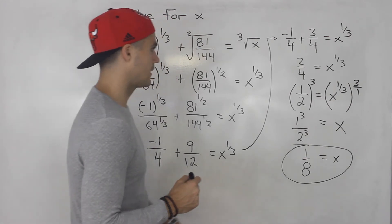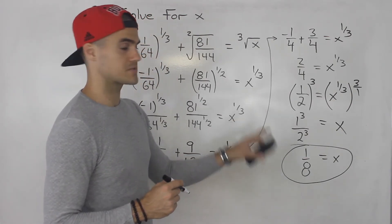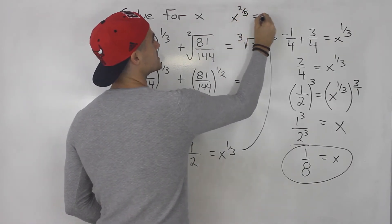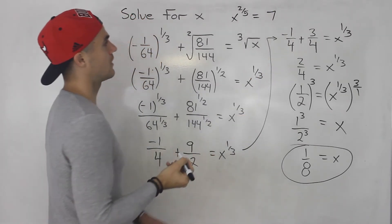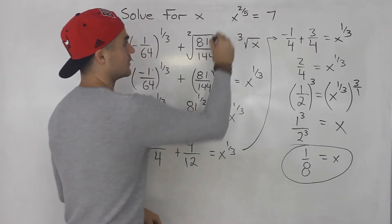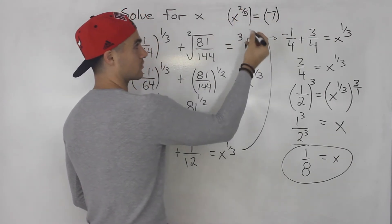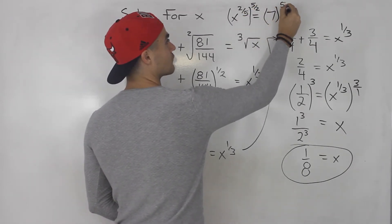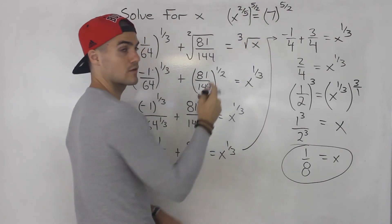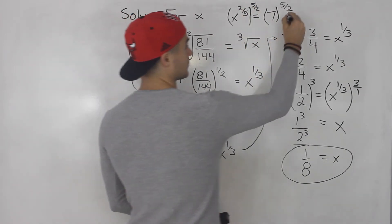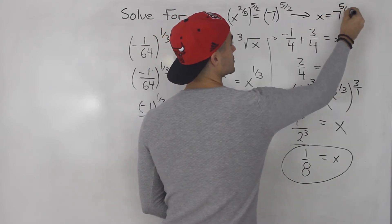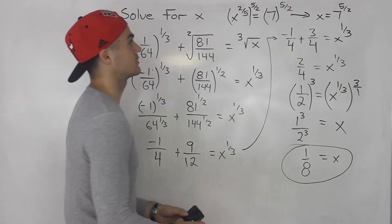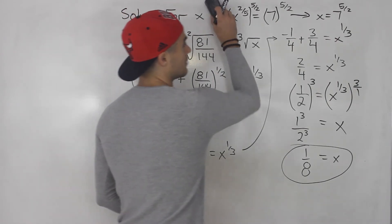Going back to the general rule: whenever you have x to the power of a rational exponent — for example, x to the power of 2 over 5 equals 7, and we have to isolate for x — we take both sides to the power of the reciprocal. So we take this to the power of 5 over 2, which is the reciprocal of 2 over 5. Then 2 over 5 times 5 over 2 is just 1, so we end up with x equals 7 to the power of 5 over 2, which would be some decimal number. That's how you isolate for x whenever you have rational exponents.